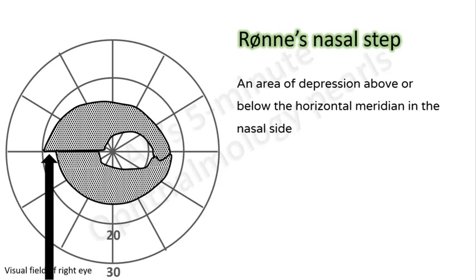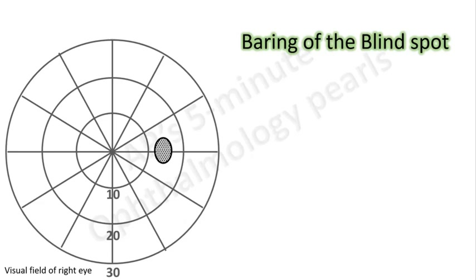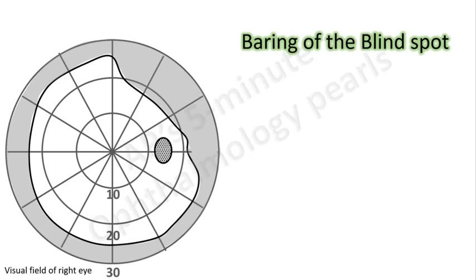A temporal wedge may sometimes be present. Baring of the blind spot is a non-specific defect. It occurs due to exclusion of the blind spot from the contracting central field.